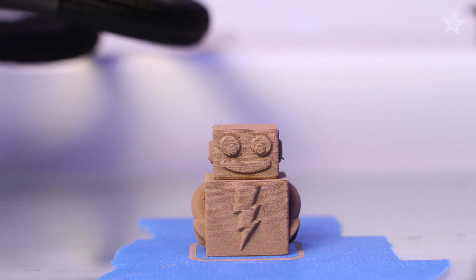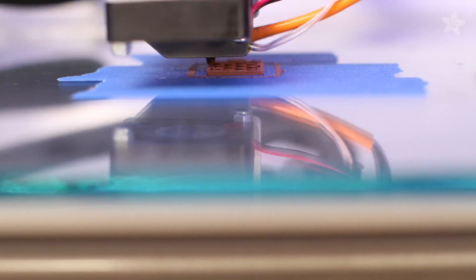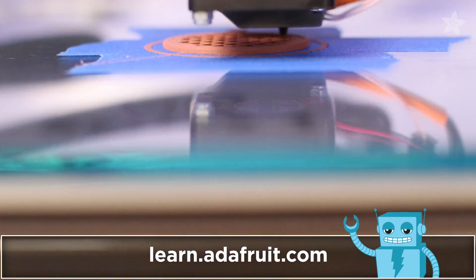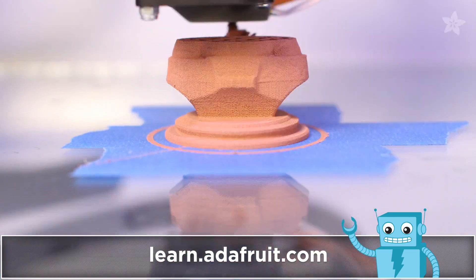For printing we used the Type A Machine Series 1 and printed at 100 microns. Check out the guide on the Adafruit Learning System for slicing settings and more details on usage. Also, be sure to check out our video on polishing techniques.